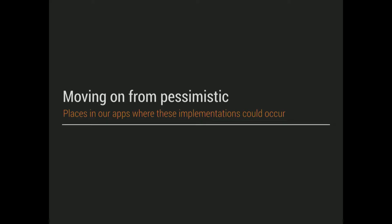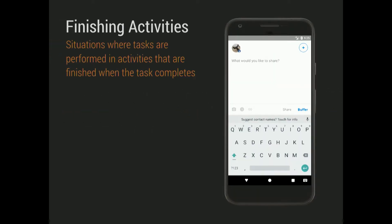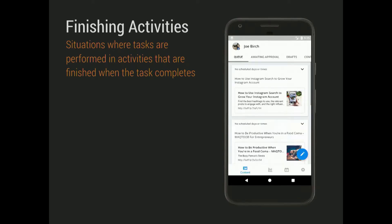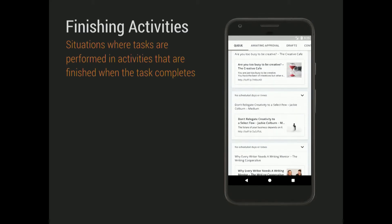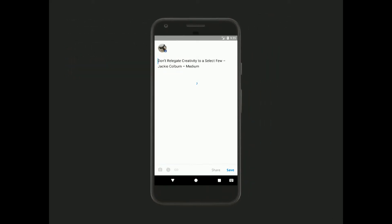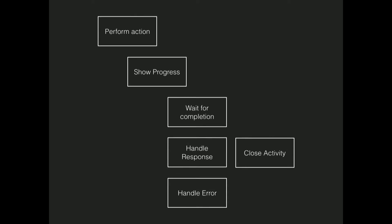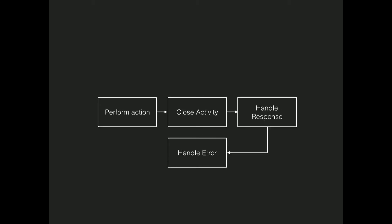This is where I wanted to look at just one or two little examples of where we've been doing this — things we've been doing to shift towards offline design. We saw this screen before where we compose an update, we buffer it, and that screen is finished when the network request completes. So the flow looks something like this: we perform an action, we block the user with a progress dialogue, we wait for that to complete, handle the response, and if it's successful we close the activity, otherwise we handle the error. And it's pretty obvious that the blocking and the waiting are the pessimistic parts of that flow.